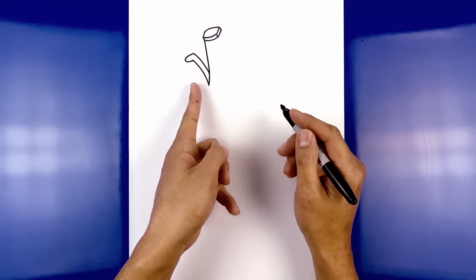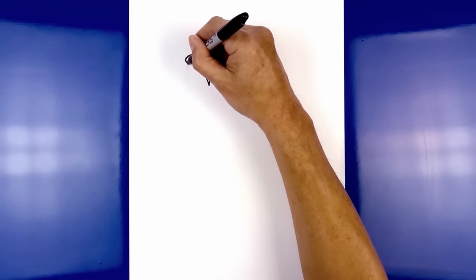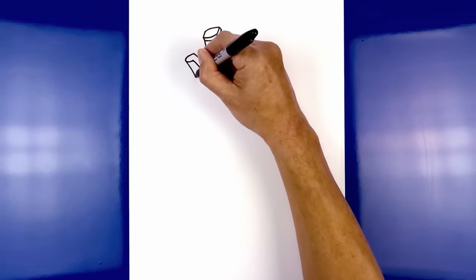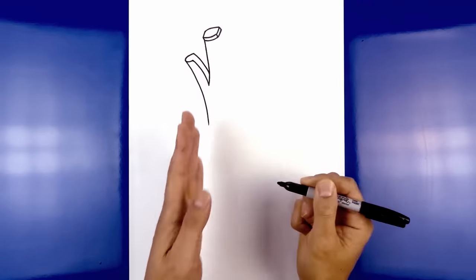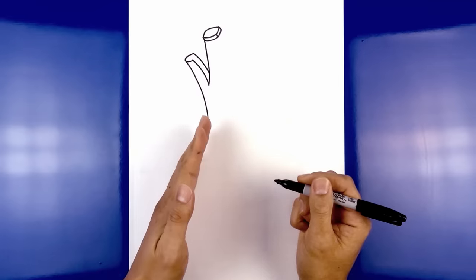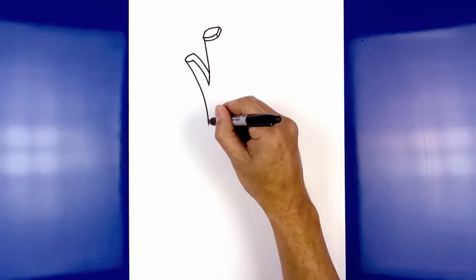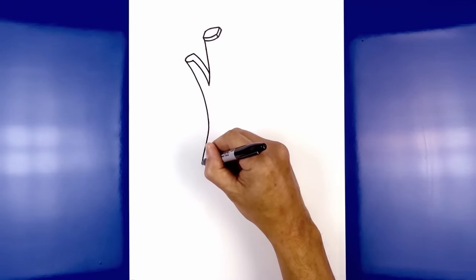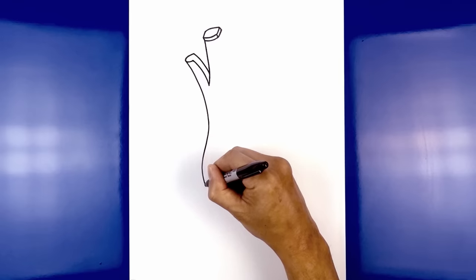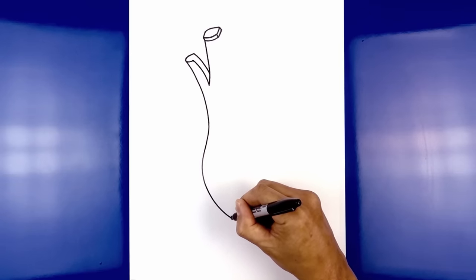Now we're going to go back to the outside curve, come in and then down. Pull this in, now we're just going to come down. Now we're going to curve out and then back in towards the center of the banana. Pull into a curve going out, round out the body, now we're just going to pull that back in towards the center.